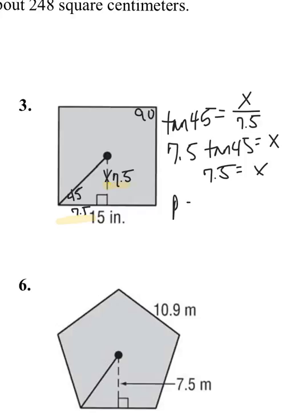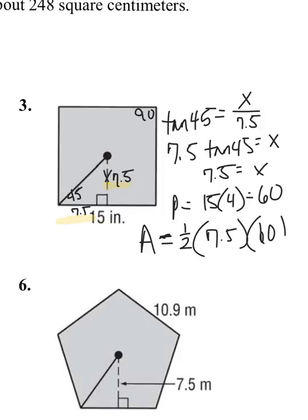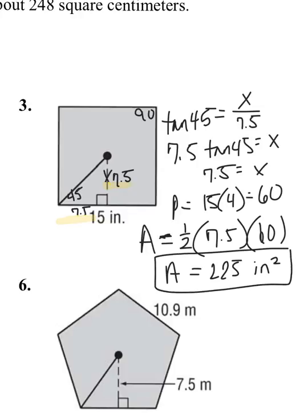So the apothem is 7.5. The perimeter, each side is 15. There's four sides. Perimeter is 60. So the area of this square, and I know that we know shortcuts, that's fine. I want to stick every way for this section using the one-half times the apothem times the perimeter. We get area equals 225 inches squared. Now, some of you guys are like, it's a square, 15 times 15. You are absolutely correct. The answer is still 225.